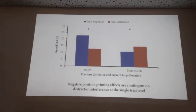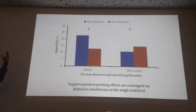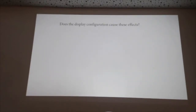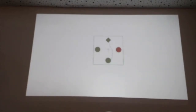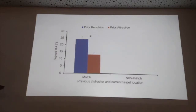The main idea is that negative position priming effects seem to be contingent on distractor interference at the single trial level — you only get that priming effect if you inhibited the distractor on the previous trial, which happens sometimes but not all the time. If you average everything together it might wash out. But broken down at the individual trial level, it's only happening some of the time. One concern was whether the display configuration caused these effects, so we tilted everything 45 degrees and focused only on cases where the target was at the top — and we found the same effect.